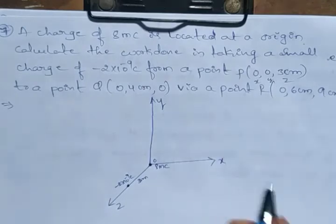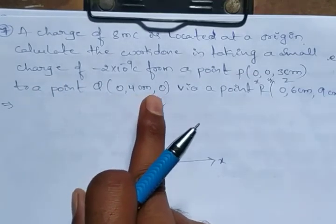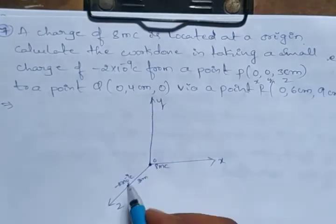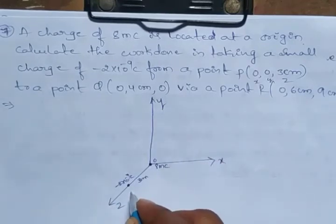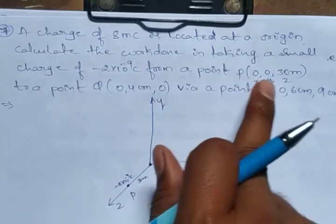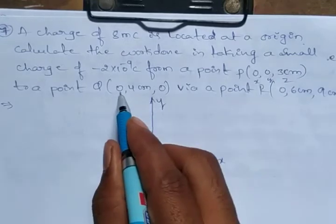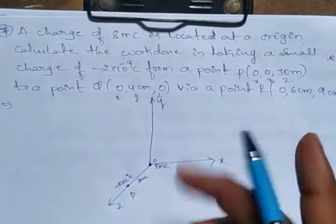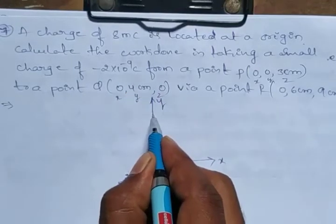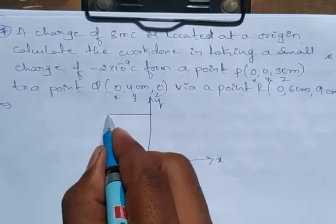So that is zero comma zero comma 3 centimeter — that is point P. Next, to a point Q at coordinates zero comma 4 centimeter comma zero. Observe carefully: the y-axis value is 4 cm for point Q.